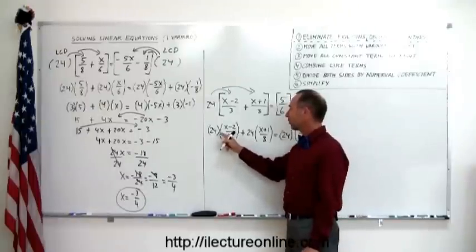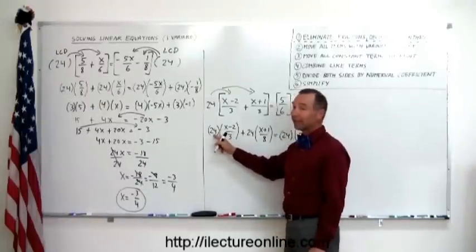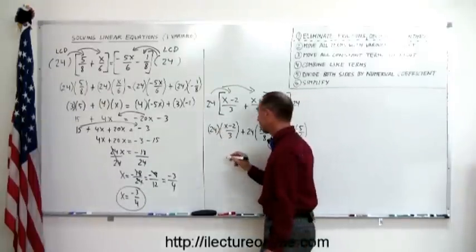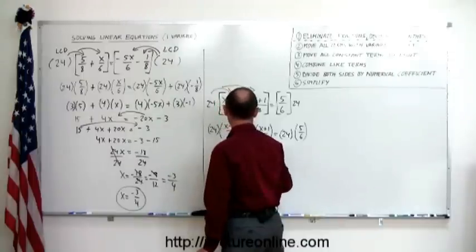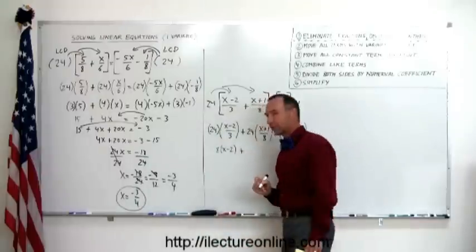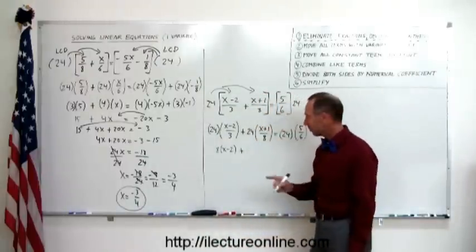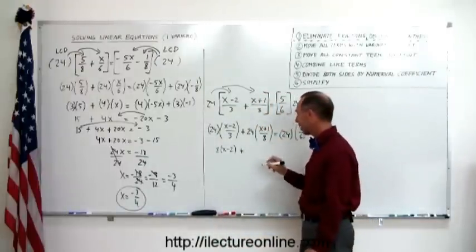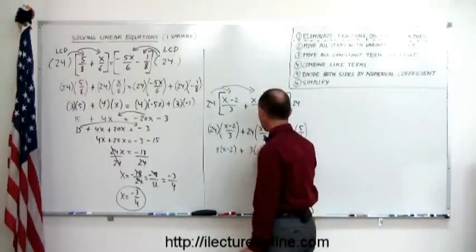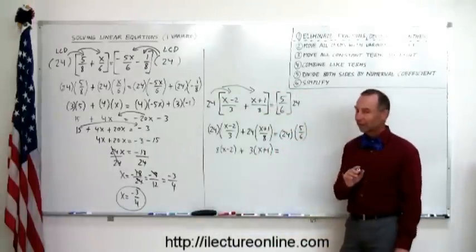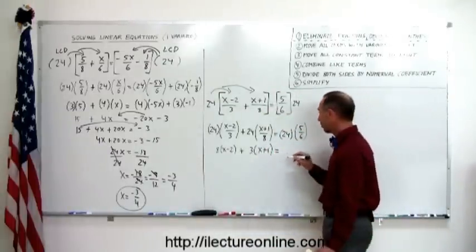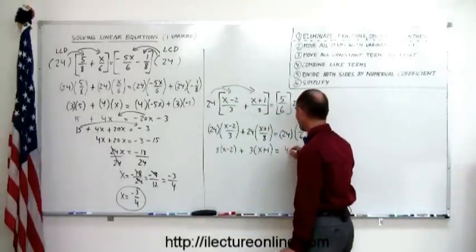We notice that 3 goes into 24 exactly 8 times, so this simplifies to 8 times x minus 2. And 8 goes into 24 exactly 3 times, so 24 divided by 8 is 3, making this 3 times x plus 1. And 6 goes into 24 exactly 4 times, so the right side becomes 4 times 5.